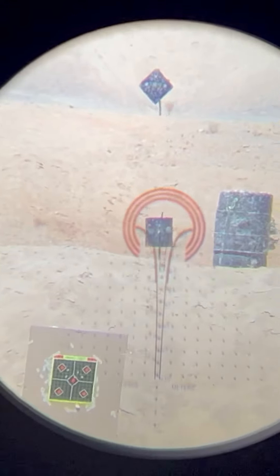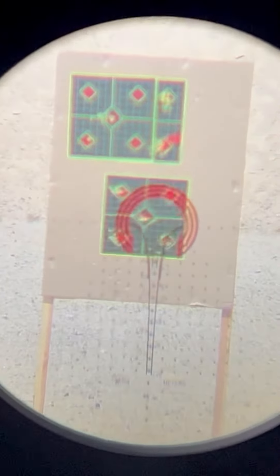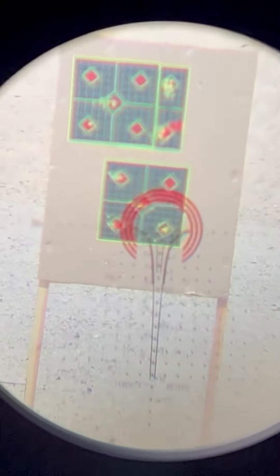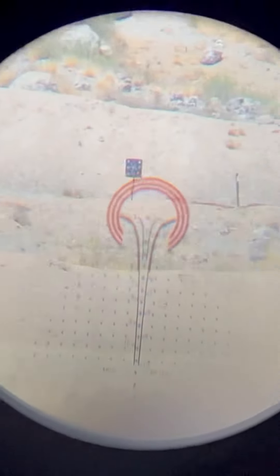For more deliberate engagements, the target is still ranged with parabolic arcs, then the user's dope is used to determine the exact bullet drop. We call this technique size, aim, shoot. Size the target with the arcs, aim using your dope, then shoot.